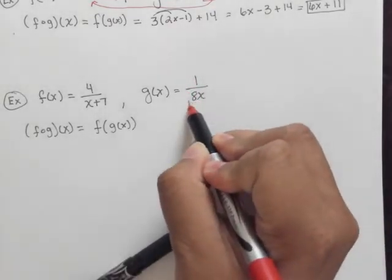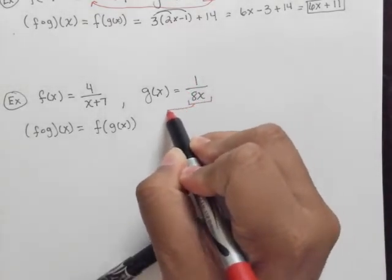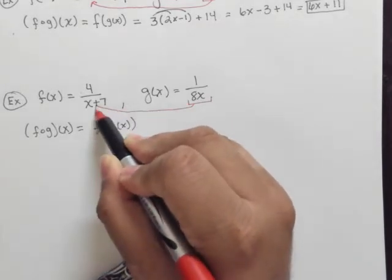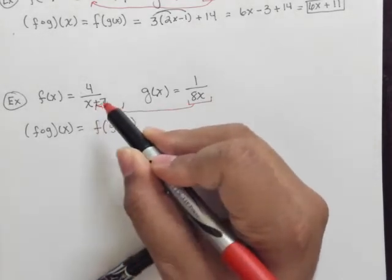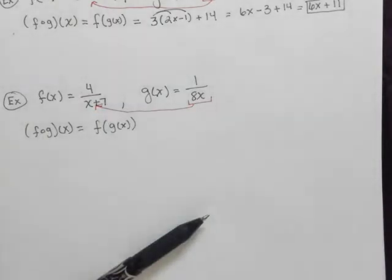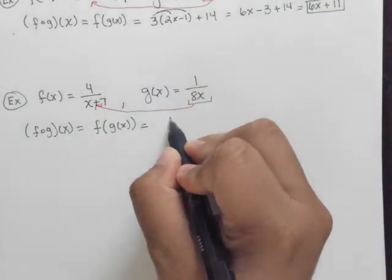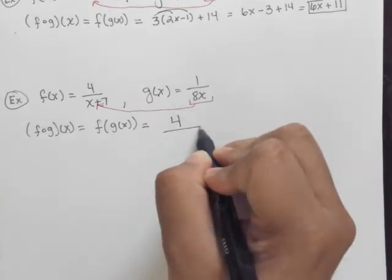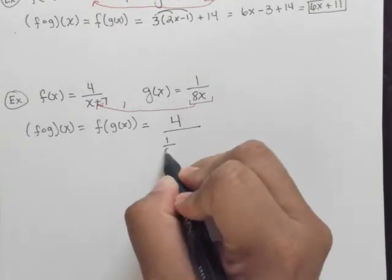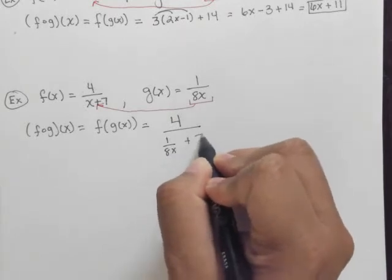I have to take this fraction g, this rational expression, and I have to plug it in here for x. So there we have it. f composed of g of x. So let's see what that looks like. That looks like this. 4 over and then it's 1 over 8x plus 7.